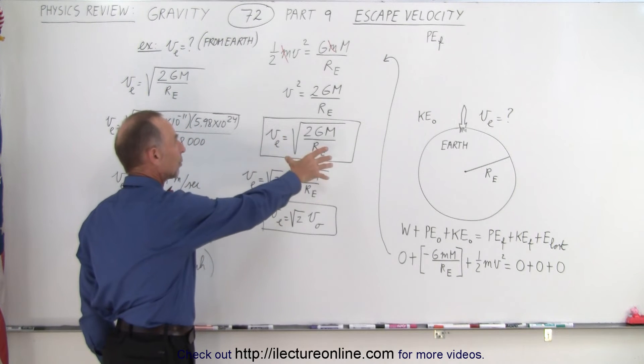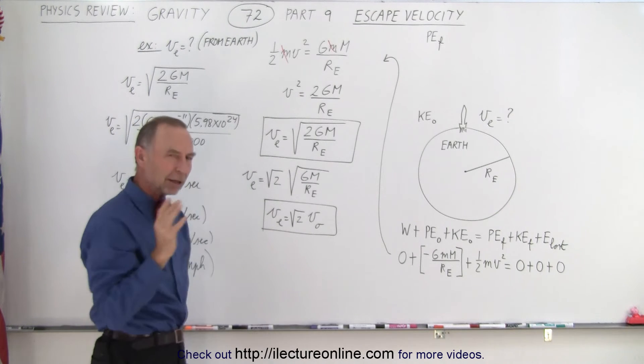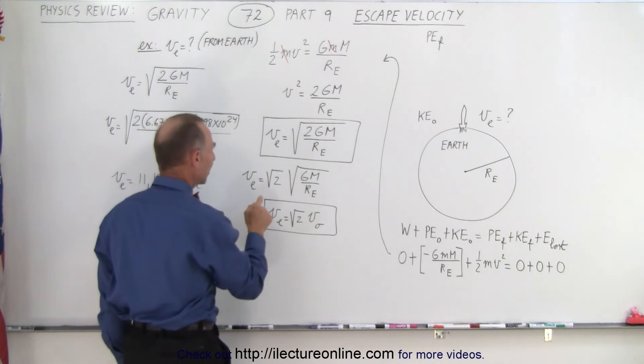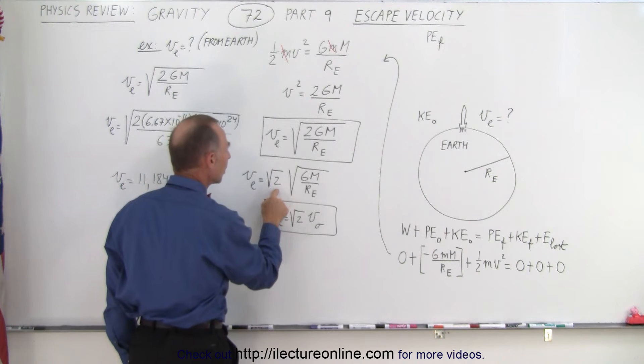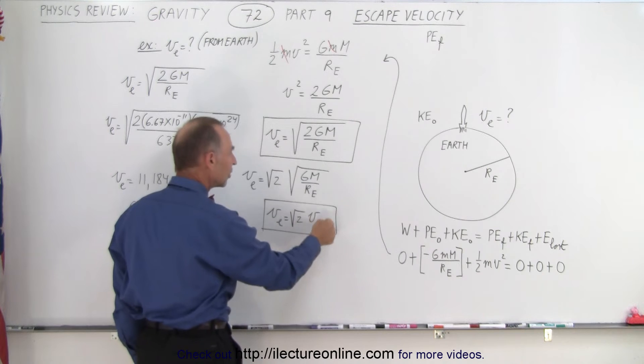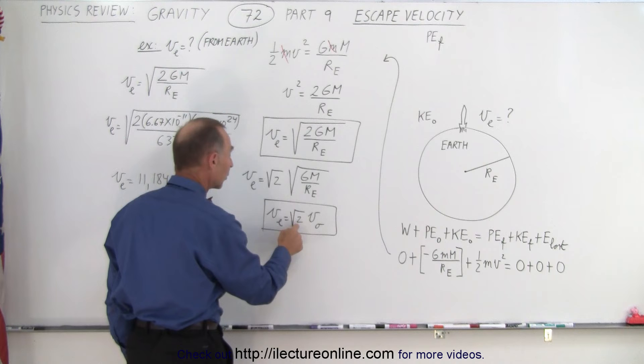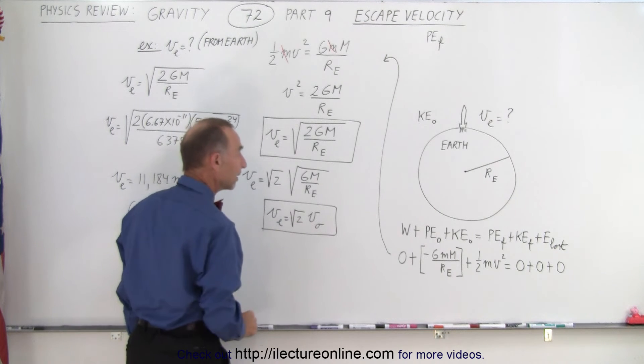Now notice you take the square root of that and if you do that you realize wait a minute that looks familiar because it's the same as saying the square root of 2 times the square root of GM over r and that of course is the orbital velocity. So in other words the escape velocity is the square root of 2 times the orbital velocity.